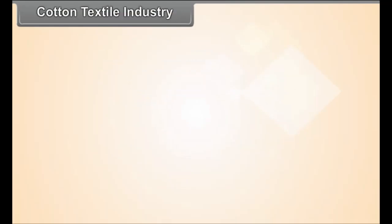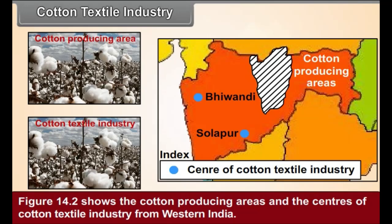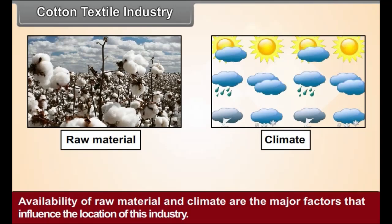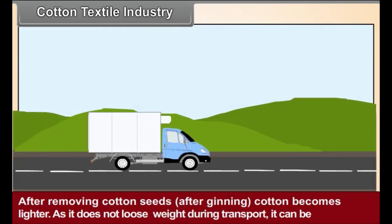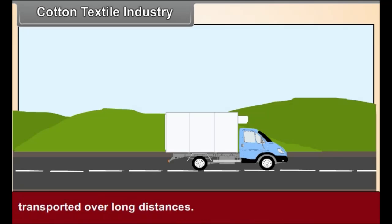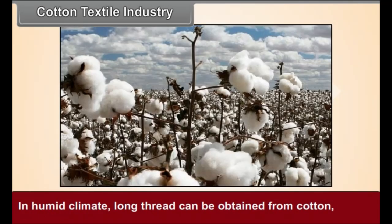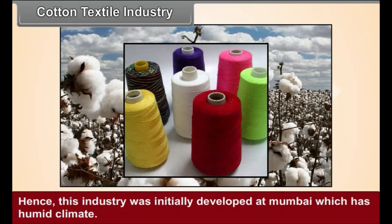Cotton Textile Industry. Figure 14.2 shows the cotton producing areas and the centers of cotton textile industry from Western India. Availability of raw material and climate are the major factors that influence the location of this industry. Cotton does not perish quickly. After removing cotton seeds — after ginning — cotton becomes lighter. As it does not lose weight during transport, it can be transported over long distances. Hence, this industry can be started at locations far away from the raw material areas. In humid climate, long thread can be obtained from cotton. Moreover, the frequency of breaking of thread is also low. Hence, this industry was initially developed at Mumbai, which has a humid climate.